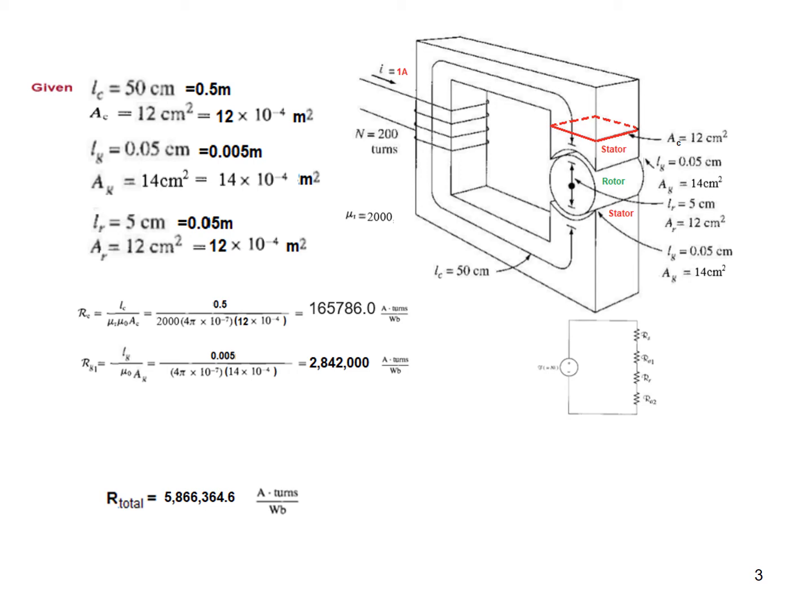The first one is the reluctance for the stator. Here we put Lc, the stator dimension converted into meters. So Lc is 0.5 meters divided by μr, which is given to be 2000, times μ₀, which is 4π × 10⁻⁷, then area of cross-section. Solving this we get 165786.0 ampere turns per weber for the stator term.